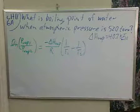What is the boiling point of water in Breckenridge, Colorado, where the atmospheric pressure is 522 torr? To answer this question, we need the heat of vaporization of water, which is a positive 40.7 kJ per mole. Vaporization is an endothermic process.